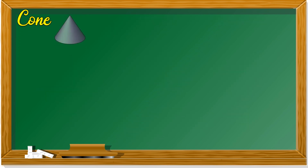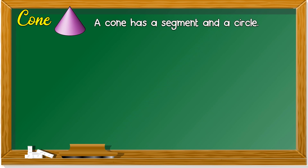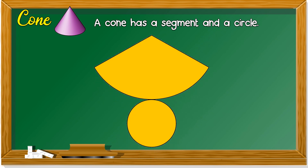Cone — like an ice cream cone. A cone has a segment and a circle. It looks like this — so this is the net of a cone.